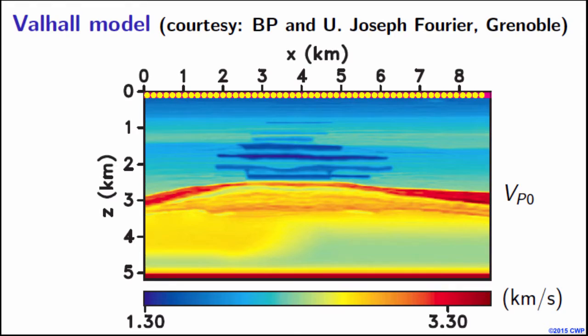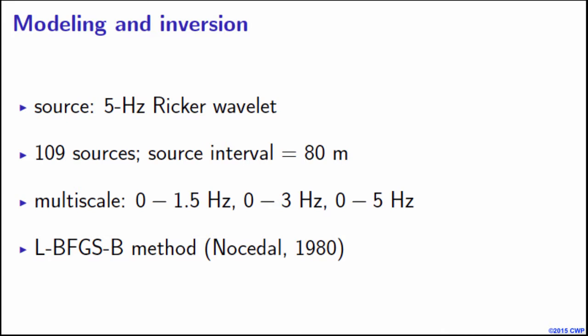So to generate the observed data, we use a vertical displacement source, whose time function is a Ricker wavelet, with a peak frequency of 5 hertz. We have got 109 sources, with a source interval of 18 meters. As I said, the receivers are placed on every grid point. We use a multi-scale approach, in which we go from different frequency ranges, shown on the slide here. And we scale the gradient by an inverse Hessian that is computed using the low memory equivalent of the L-BFGS Hessian.